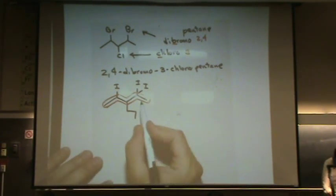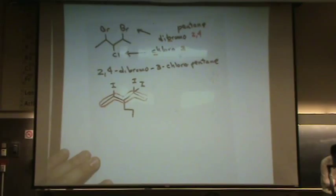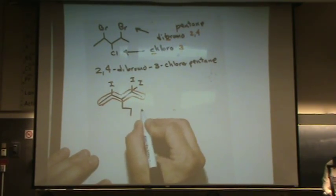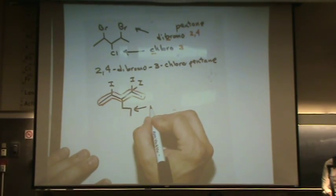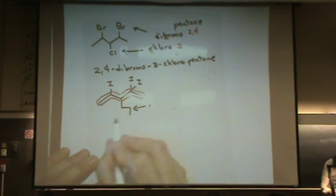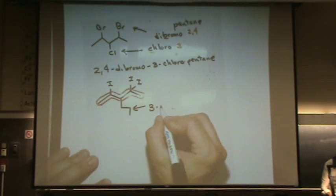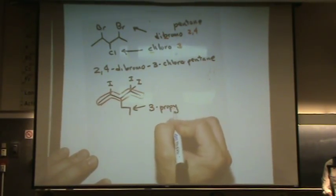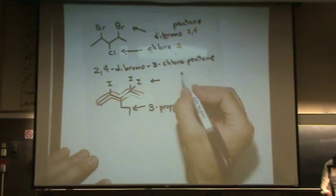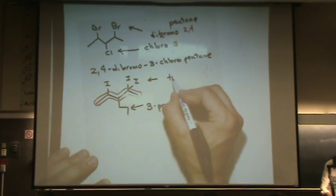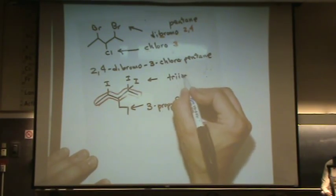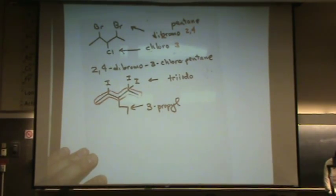So, the longest chain is actually going to be a pentane. So, this is going to be called a what? Propyl. That's a propyl. It's a 3-propyl. And these are iotos. It's a tri-ioto. A lot of vowels there.